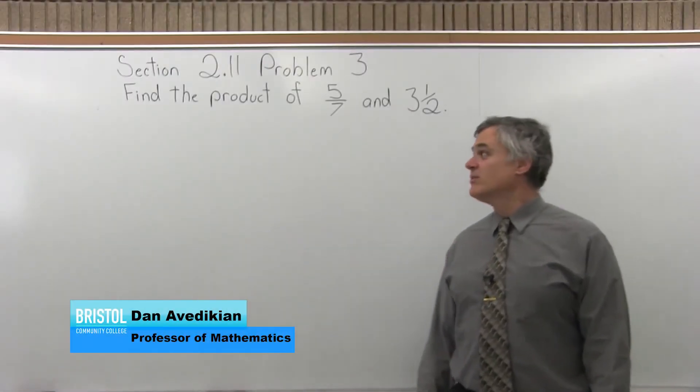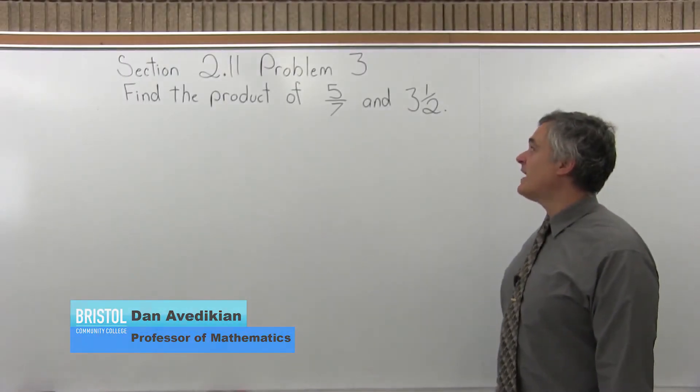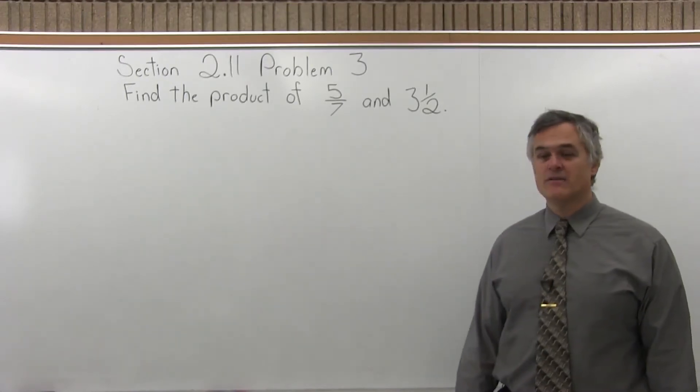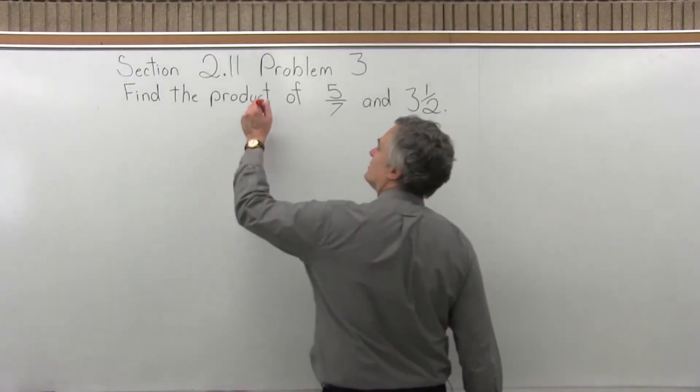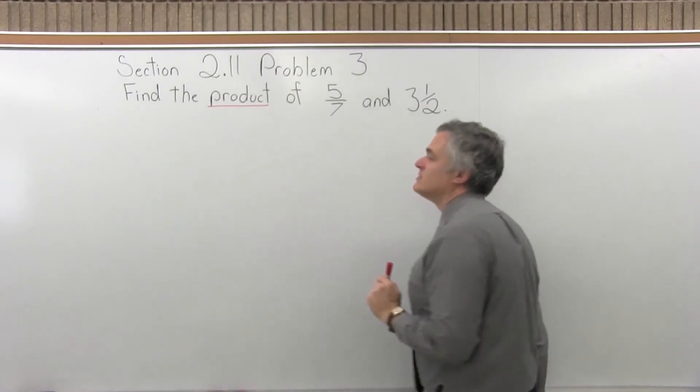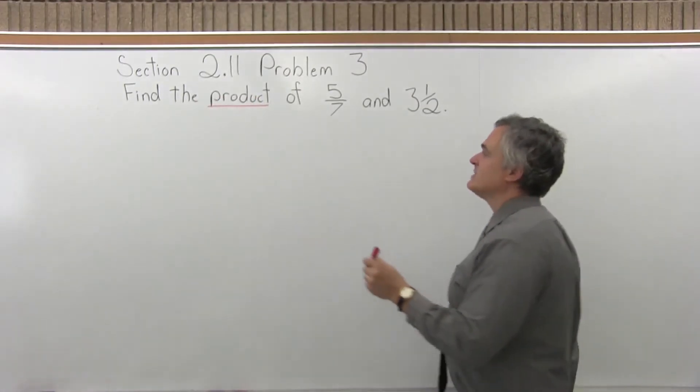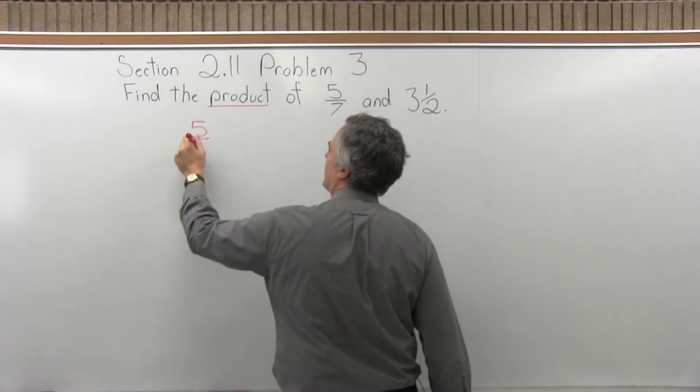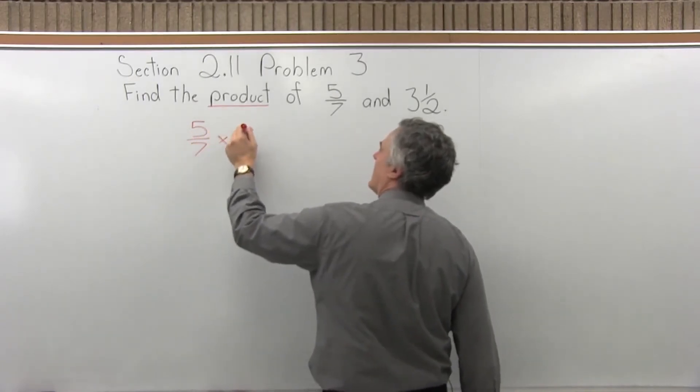This is Section 2.11, Problem 3. It says find the product of 5 sevenths and 3 and a half. So because the word product is used, that means we must multiply. This is the same as saying multiply 5 sevenths times 3 and a half.